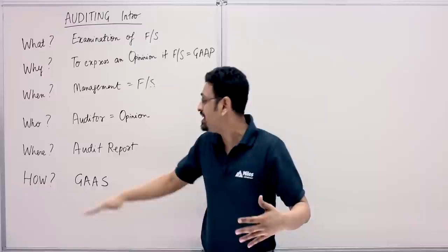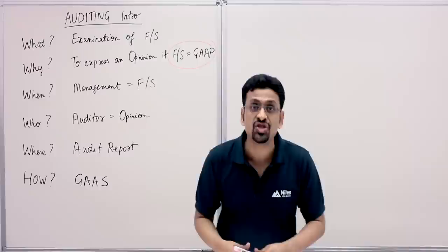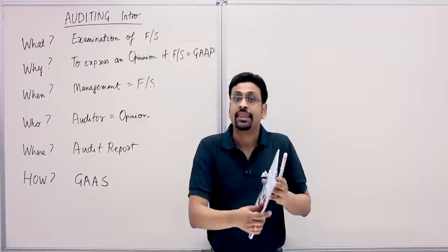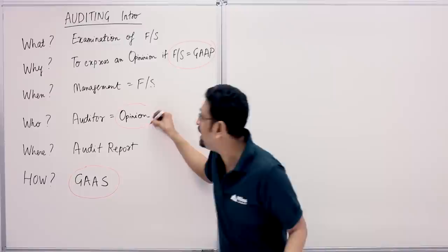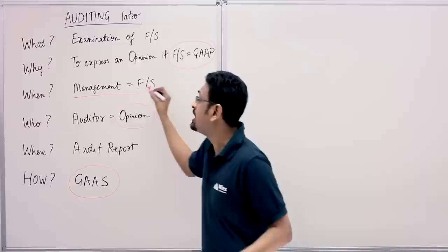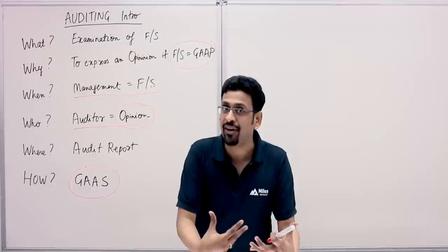Note: financial statements are prepared as per GAAP, so management uses Generally Accepted Accounting Principles to prepare the financials. They give it to us and we do our audit procedures as per GAAS to express our opinion on these financials. Once again: management is responsible for the financials; we as auditors are responsible for our opinion on those financials.